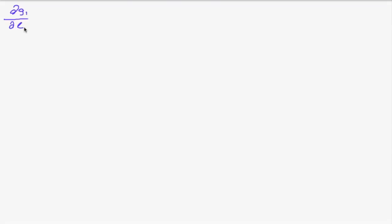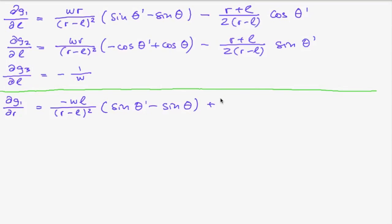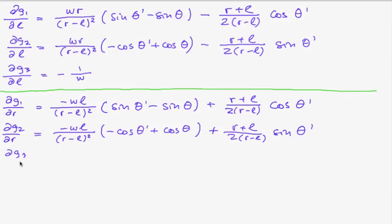So this is what we just computed. And for the second component we have, for the third component this is quite simple minus 1 divided by the width. Now the same for the derivatives with respect to r. So we get a minus here and a plus here. And finally the derivative of the third component with respect to r is 1 divided by the width.